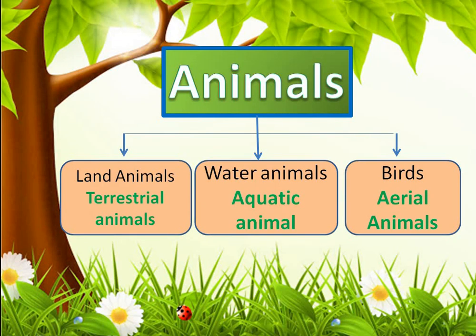Let's start with animals. Animals are divided into three types: land animals, water animals, and birds. Land animals live on land, so they are called terrestrial animals. Water animals live in water, so they are called aquatic animals. And birds, which fly in the air, are called aerial animals.